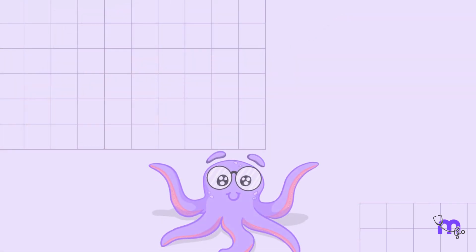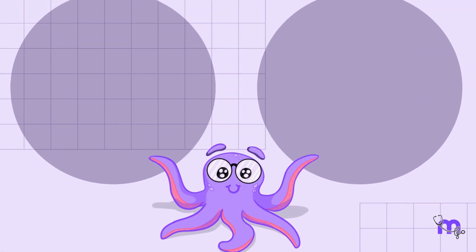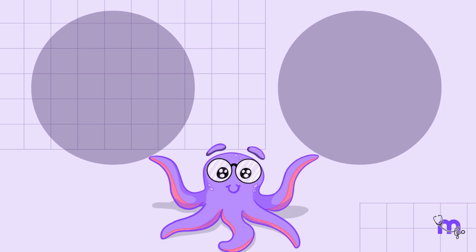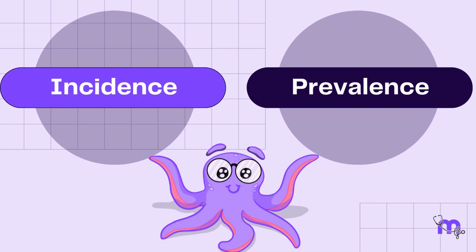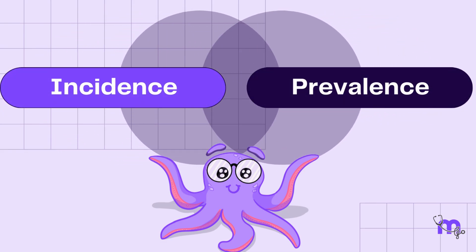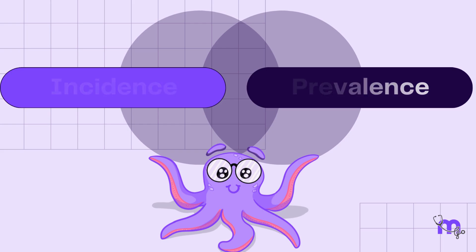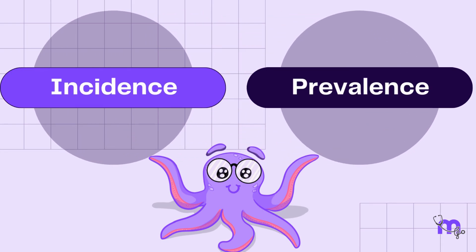In today's video, we are going to talk about two important concepts in epidemiology: incidence and prevalence. These two terms are often used interchangeably, but they have distinct meanings.